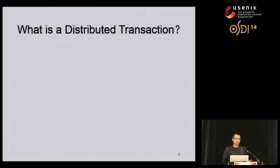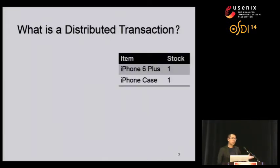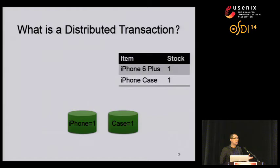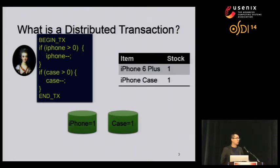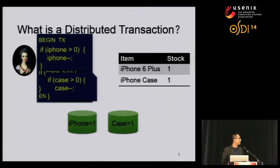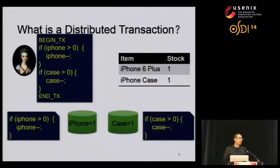To be more specific about what kind of transaction we are talking about today, think of this example: an e-commerce site that is selling both the new iPhone 6 Plus and its case. For scalability reasons, the stock level of the two items are stored on two different servers. Now we have a customer, Marie, who is trying to purchase both the iPhone and the case in the same transaction. In this purchase, we need to do a quantity check before actually selling the item. The transaction is formed as a stored procedure and its pieces are distributed to servers to execute. After execution, the server will reply the results to the customer, so Marie will have both her iPhone and her case.